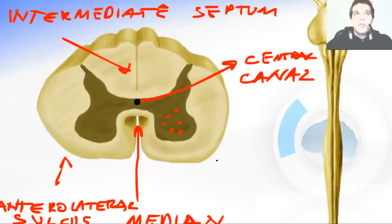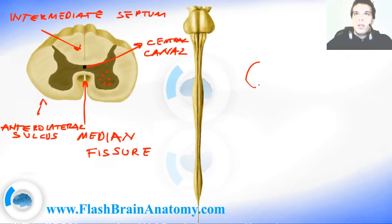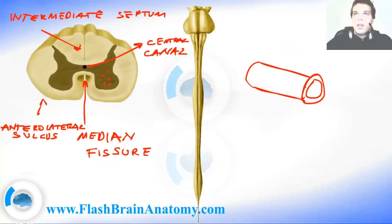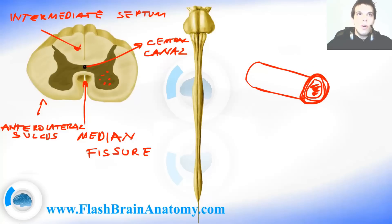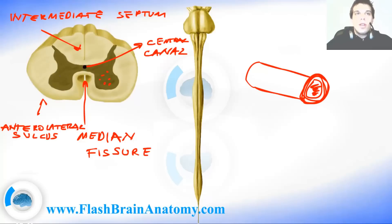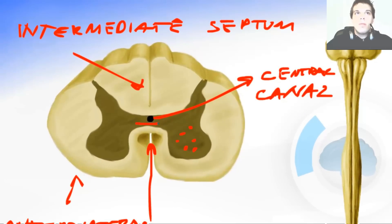Recall from the embryology videos that the neural tube had a central channel surrounded by cells. That central channel remained small while all the cells around it grew — that's why we have a very small central canal and a much larger surrounding spinal cord. Along the whole length of the spinal cord there are nerve fibers that cross sides, called commissures. You can see the gray commissure and the white commissure here — these are the places where the two sides exchange fibers.